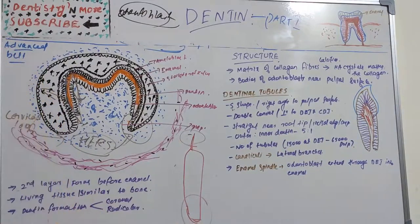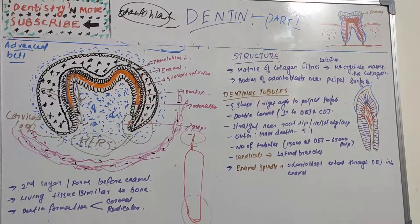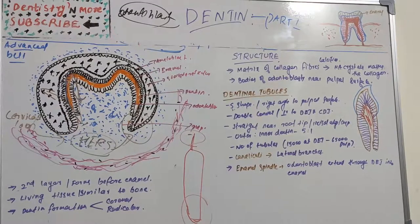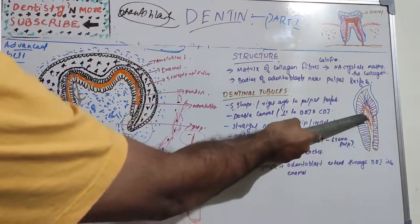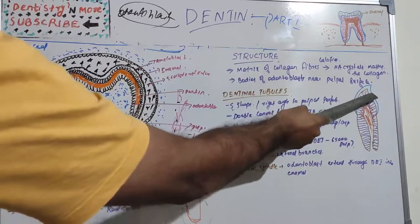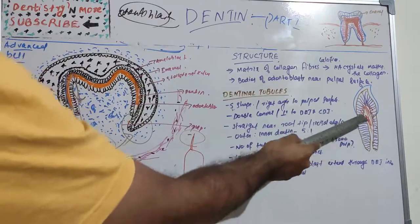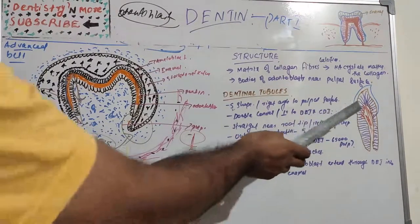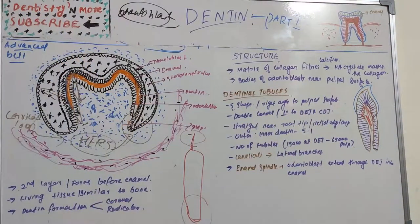The bodies of odontoblasts are arranged in a layer on the pulpal surface, and only their cytoplasmic processes are included in the tubules in the mineral matrix. Each cell gives rise to one process which traverses the predentine and calcified dentine within one tubule, and terminates in a branching network at the DEJ or CEJ — the dentino-enamel junction in the crown and cemento-dentinal junction in the root.